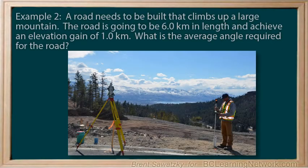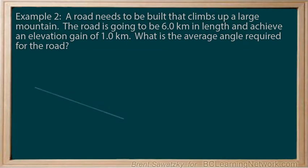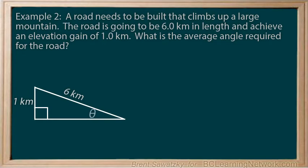One more example, Example 2: A road needs to be built that climbs up a large mountain. The road is going to be 6 kilometers in length and achieve an elevation gain of 1 kilometer. What is the average angle required for this road? Let's start with a sketch. We have the road at 6 kilometers, and we have the elevation gain of 1 kilometer. We can draw in a horizontal line and our unknown angle, theta. The road itself is our hypotenuse, across from the 90 degree angle. Opposite to theta is our elevation gain, and adjacent is our horizontal side.